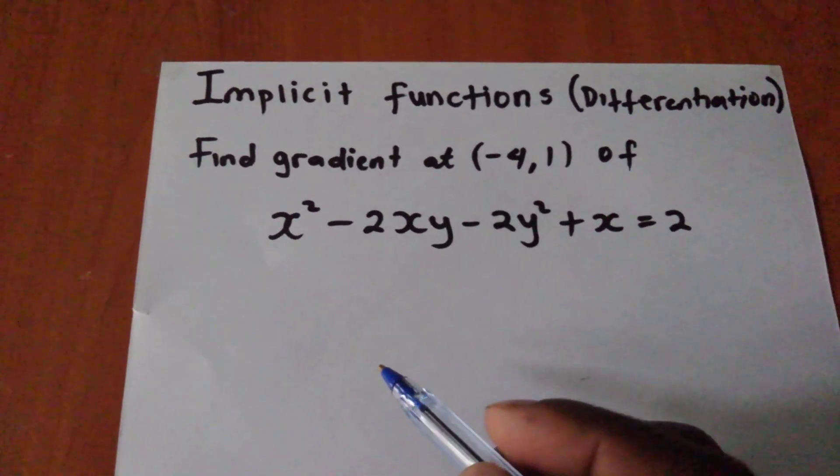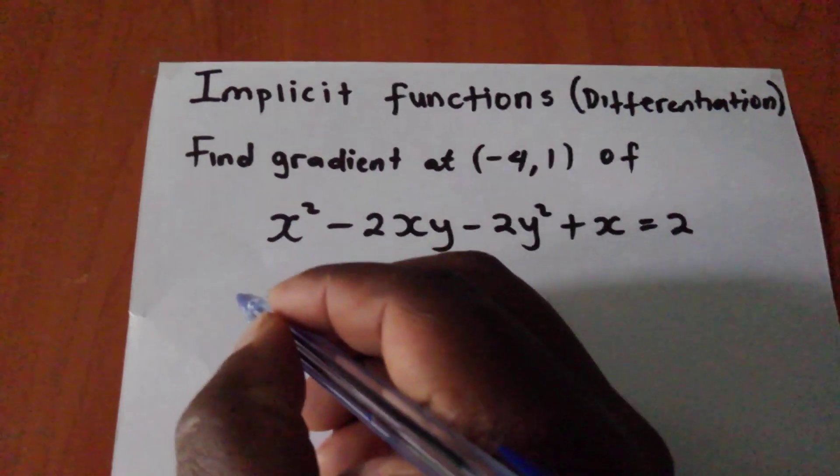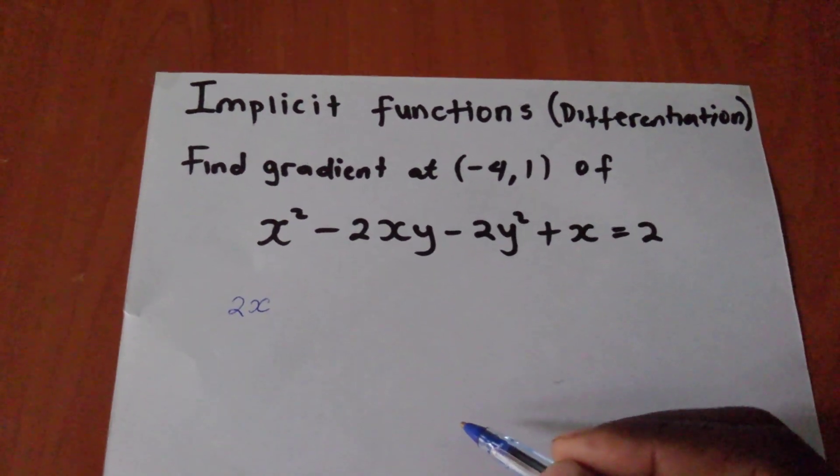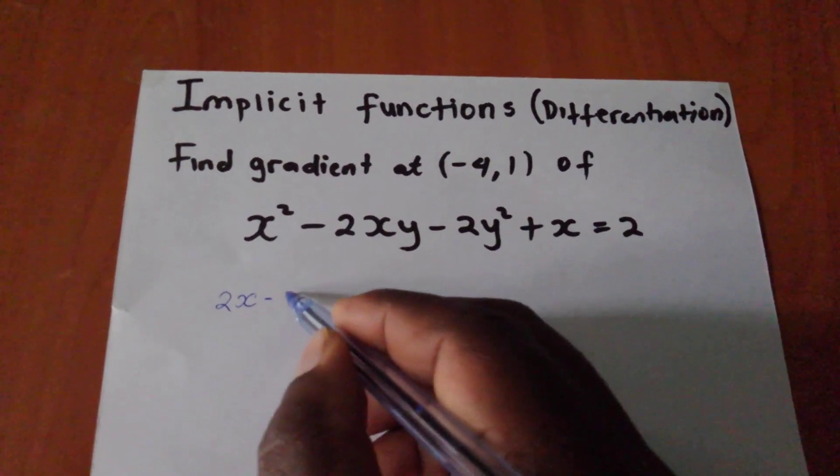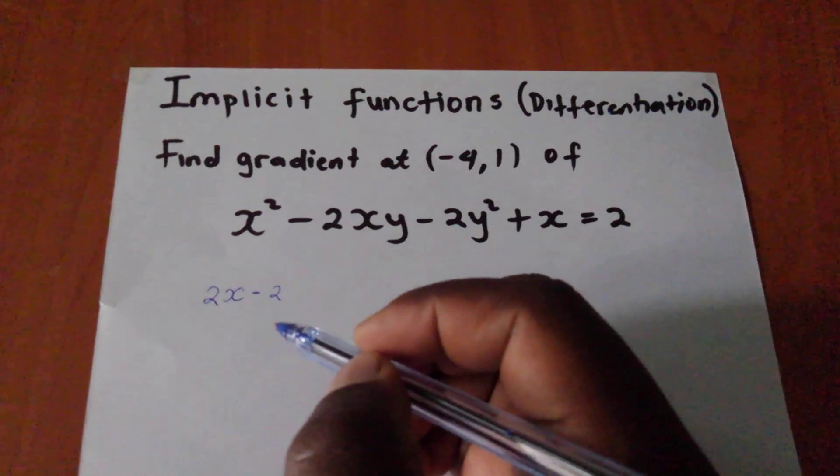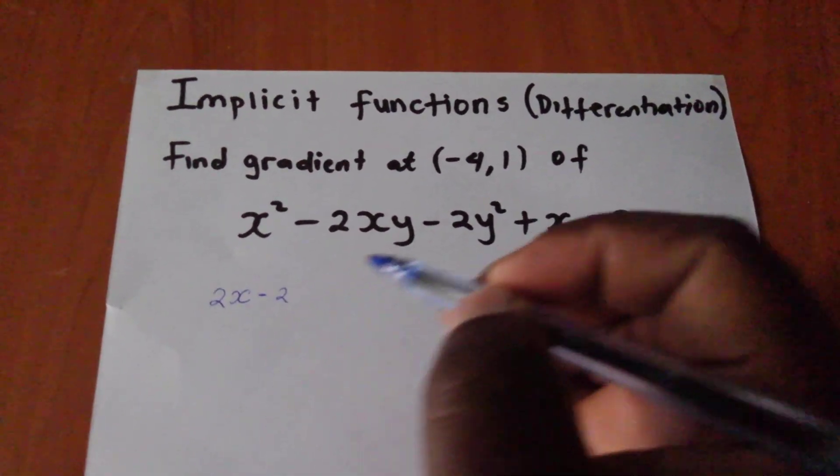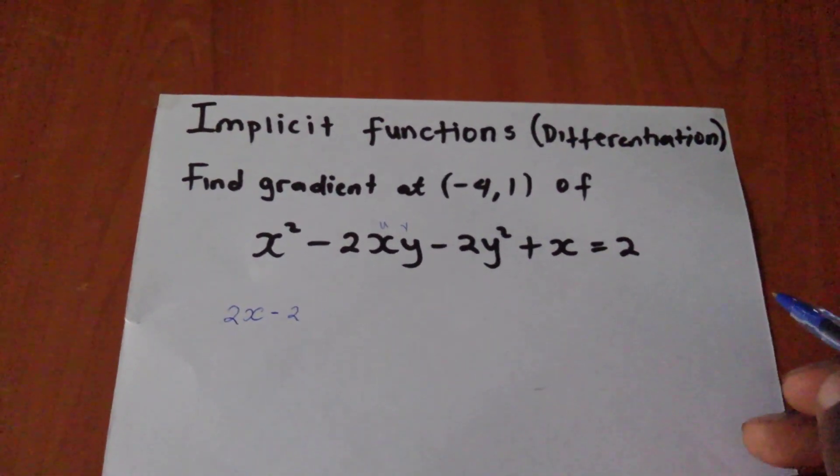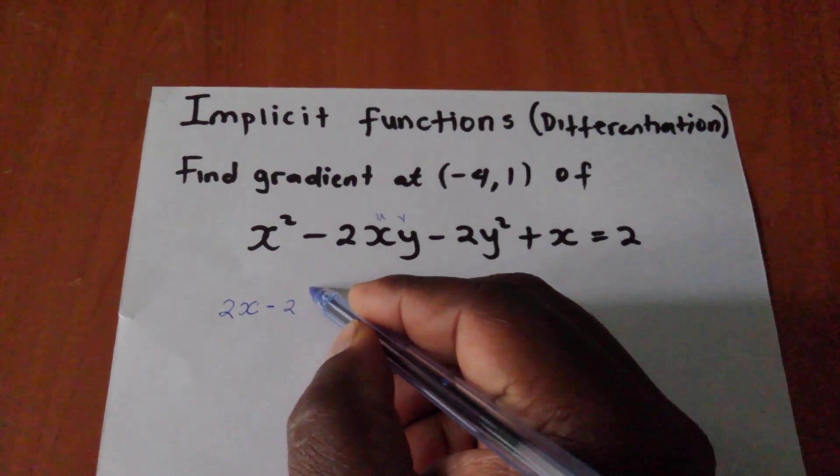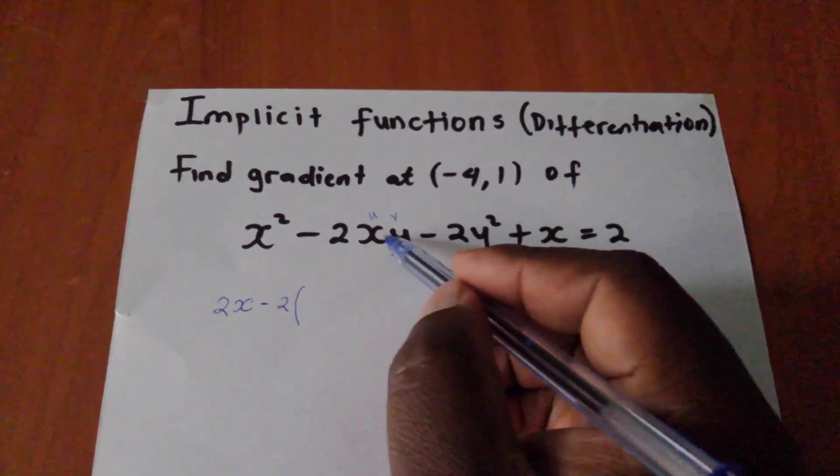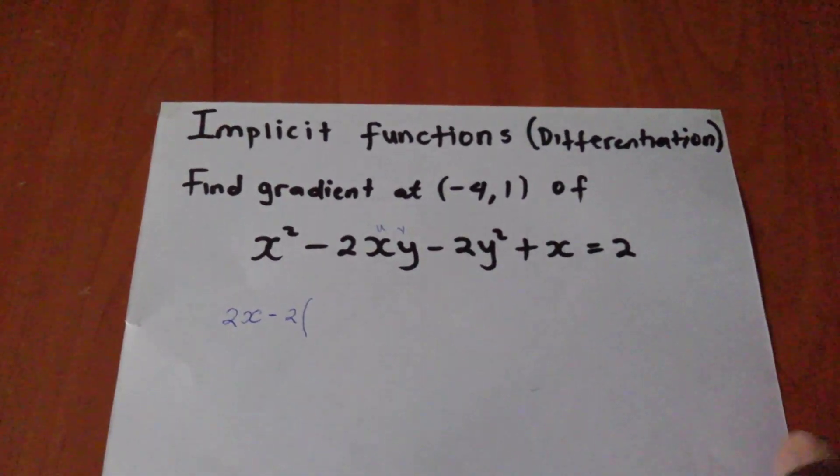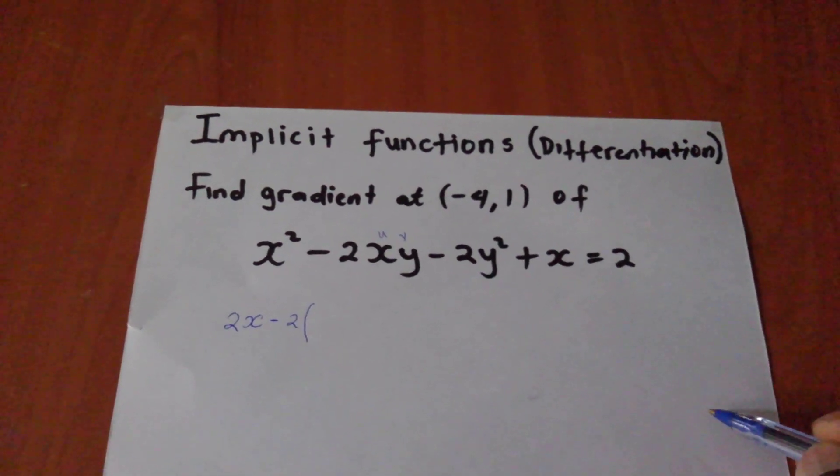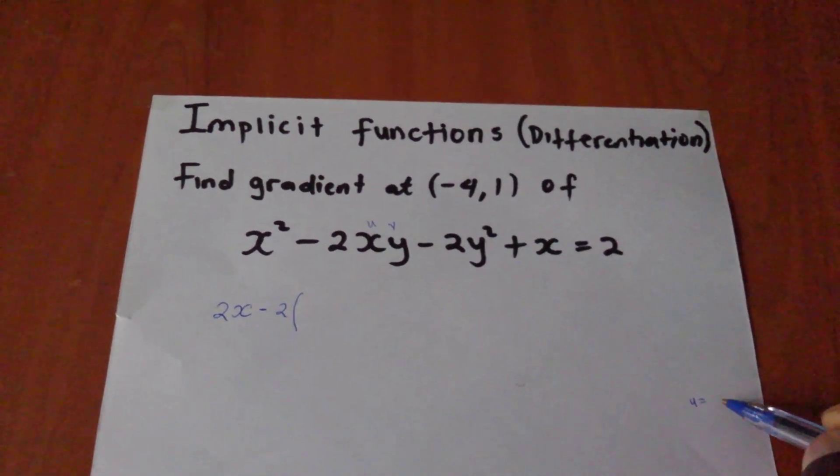If you differentiate x squared, you shall get 2x. I think that one you agree. Now when you look at this, I'll first pull out the 2. Now, this one you are going to use product rule method, of which this will be my u and this will be my v. I hope you understand. So I'll open a simple bracket for only this. Because it's only by product rule you can be able to solve such issues.